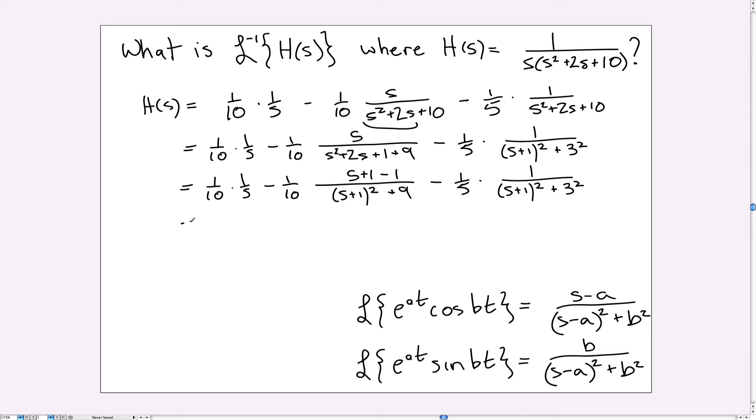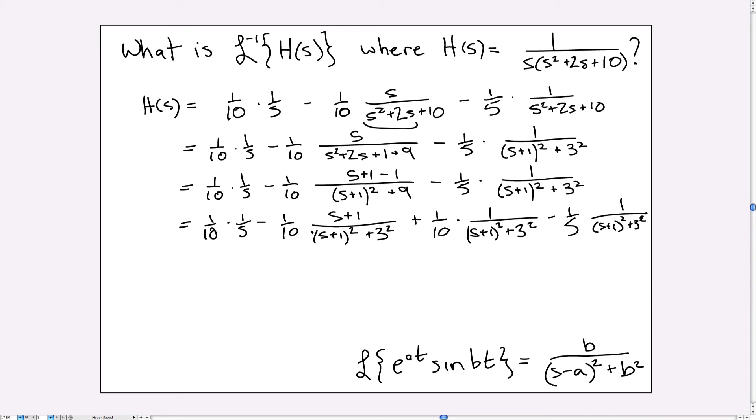Let's do this a little bit more carefully then. So let's rewrite this as 1 over 10 times 1 over S minus 1 over 10. And now I'm just going to separate these out as two separate fractions. And then minus minus is plus 1 over 10 times 1 over S plus 1 squared plus 3 squared minus 1 over 5 times the same. So this one is taken care of, so I can get rid of that. And now you see this is a perfect transform of exponential times a cosine.